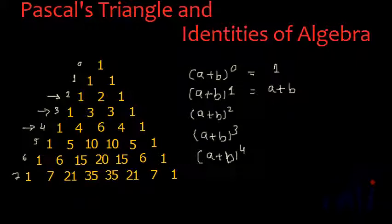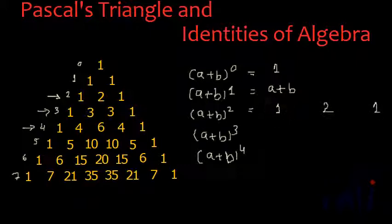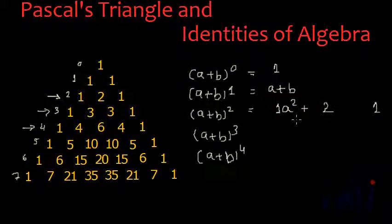Now let's see the second row of the triangle. The second row is 1, 2, 1. The first element of the row is multiplied by the maximum power of the first variable. The maximum power here is 2, so it is multiplied by A². Then you put a plus sign and reduce the power of A by 1, giving just A. After that, A will not appear again in the formula.